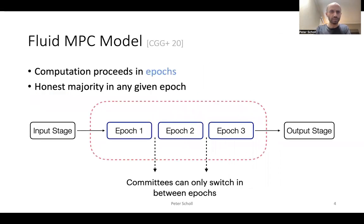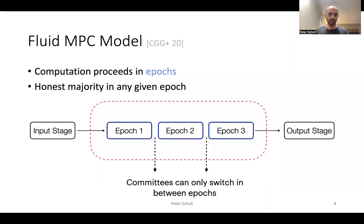Our work is based on the fluid MPC model by Chaudry et al. from Crypto 2020. In their model, the protocol proceeds in time periods called epochs, where each epoch runs within a single fixed committee of parties. They work in the honest majority setting, assuming each committee in one epoch has an honest majority. The epochs may proceed in a series of rounds of interaction, and at the end of each epoch the parties hand over their state to the next committee before going offline.